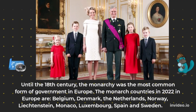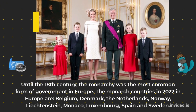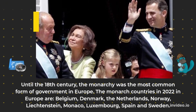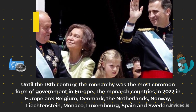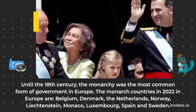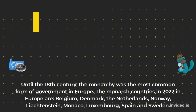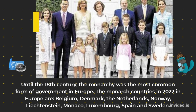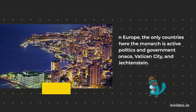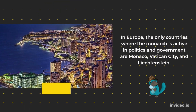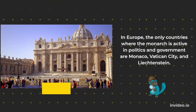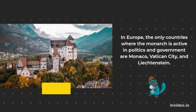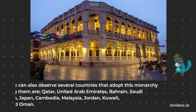Countries with monarchy. Until the 18th century, the monarchy was the most common form of government in Europe. The monarchies in Europe as of 2022 include Belgium, Denmark, the Netherlands, Norway, Liechtenstein, Monaco, Luxembourg, Spain, and Sweden. In Europe, the only countries where the monarch is active in politics and government are Monaco, Vatican City, and Liechtenstein.